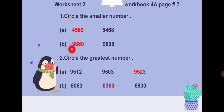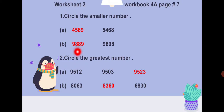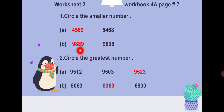Part B: nine thousand eight hundred and eighty-nine versus nine thousand eight hundred and ninety-eight. Starting from the left, nine and nine are the same, then eight and eight are the same. Moving to the tens place: eight versus nine — eight is smaller. So nine thousand eight hundred and eighty-nine is the smaller number and should be circled.